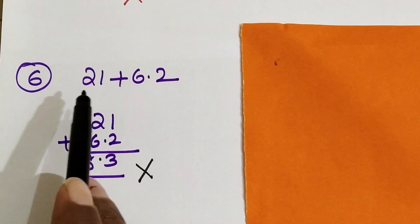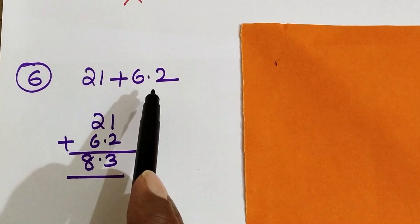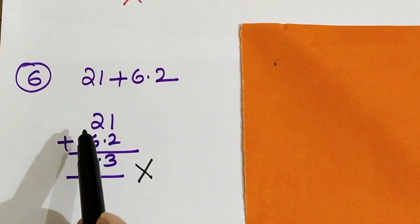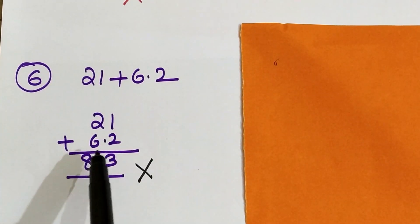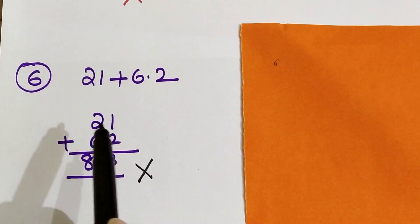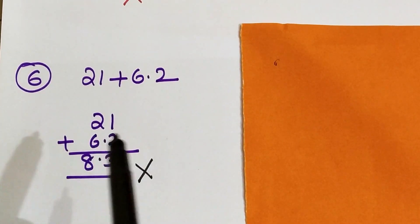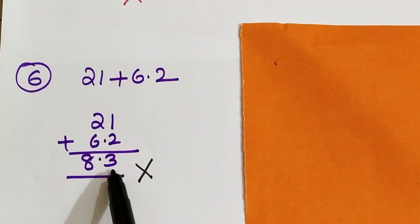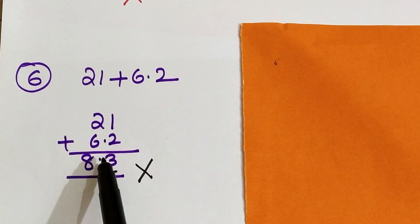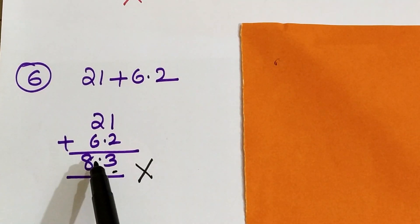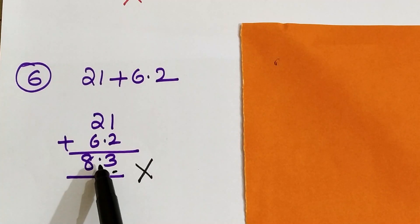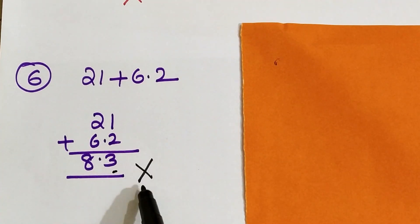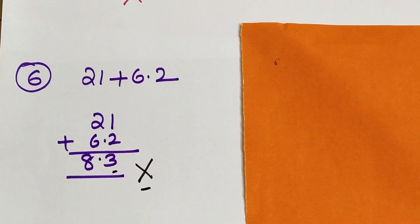We will see the sum of a natural number with a decimal number: 21 and 6.2. A common mistake is to arrange incorrectly by place values: 2 plus 1 is 3, and 6 plus 2 is 8 for the decimal part, giving 8.3. If you write this, it is a wrong procedure.